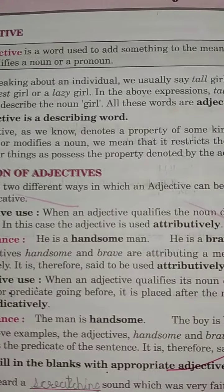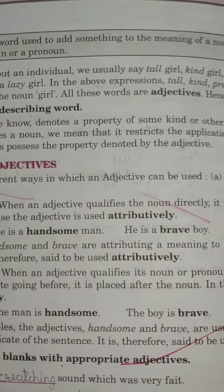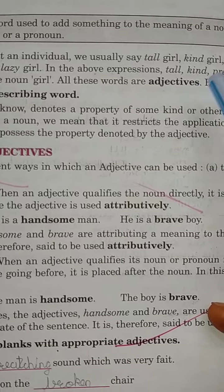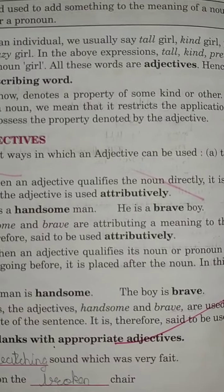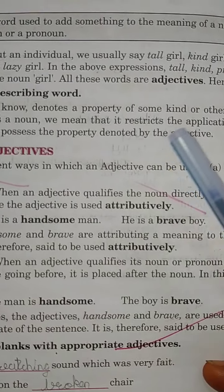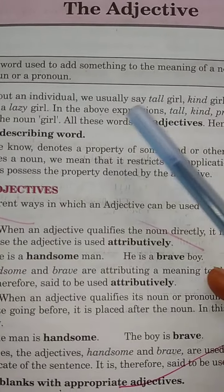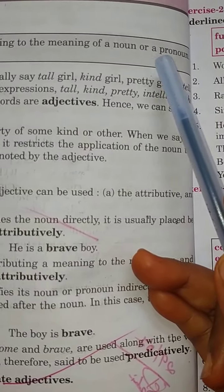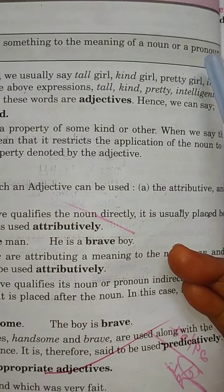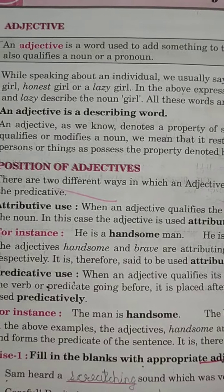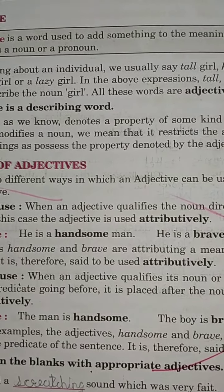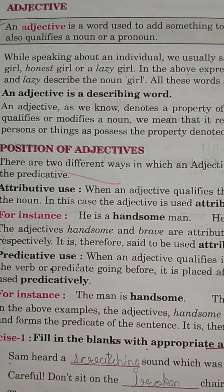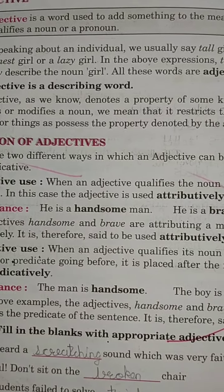Adjective jo hai, yeh word noun ki meaning mein kuch add karta hai. Like, agar main 'girl' bol rahi hoon, toh usmein kuch add kar diya — like girl kaisi hai: tall, short, white, dark etc. Toh woh ban jaayega adjective. Aur agar pronoun use kar rahi hoon, jaise 'she', toh pronoun mein bhi add hoga. 'Qualifies' matlab uski quality batana, chahe negative ho ya positive.